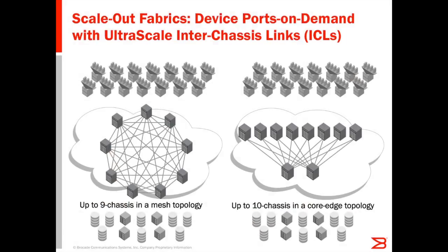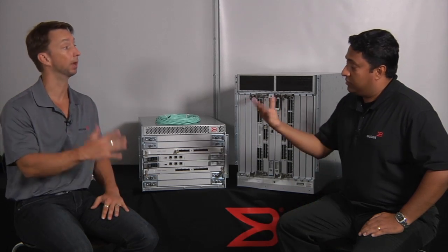We can support nine chassis in a mesh topology and ten chassis in a core-edge topology with ICLs — that's the currently tested topology by Brocade. Potentially we can scale out even beyond that in the future, provided that we test it out.